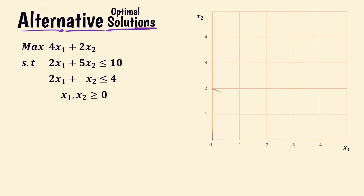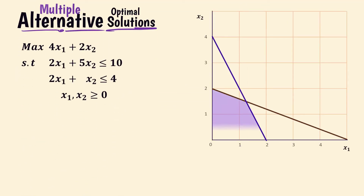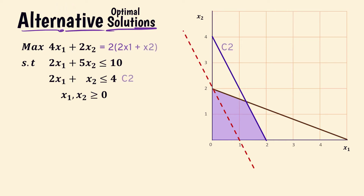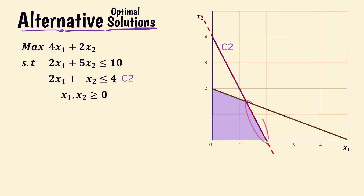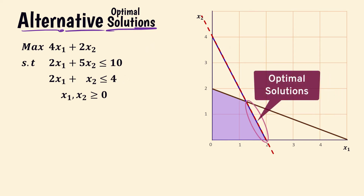In essence, infeasibility occurs when an artificial variable is positive in the final solution. If the value of the artificial variable is 0, then it can be discarded and we have a solution. However, with a positive value, the solution is infeasible. Next, we discuss the alternative or multiple optimal solutions case. Note that the objective function is parallel to the second constraint line, so every point in that overlap within the feasible region will be an optimal solution point — we have an infinite number of optimal solutions.